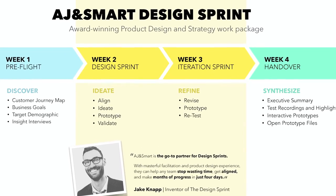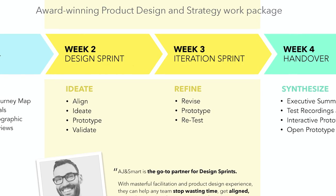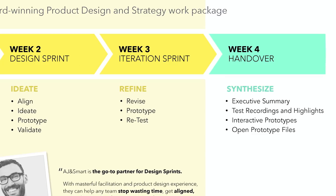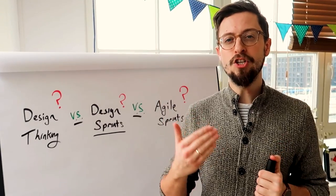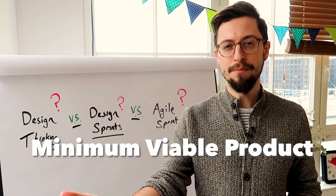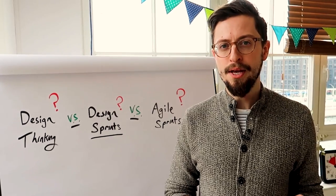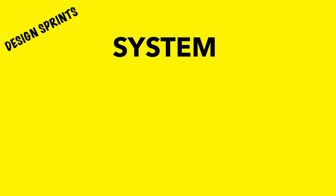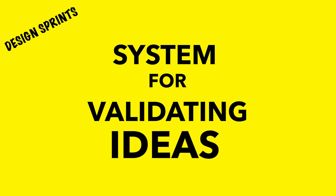At AJ and Smart we do a four-week process where we have two design sprints, and at the end of those two design sprints you essentially have a high-fidelity prototype that's been tested in two rounds — which is essentially ready to be turned into the MVP, the minimum viable product, or essentially the very first version of the app. This means that the design sprint is a system for coming up with ideas and validating them.